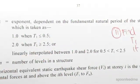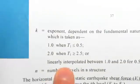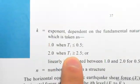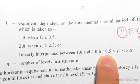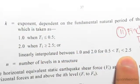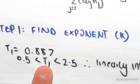Now we found in the previous video t1 was 0.887, which means t1 is between 0.5 and 2.5. So it says linear interpolate between 1 and 2 for t1 between 0.5 and 2.5 which is our case because t1 is 0.887. So we need to linear interpolate.